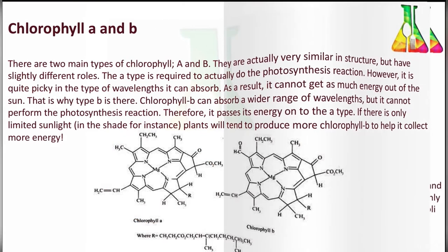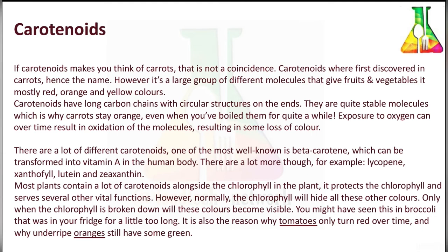Carotenoids are fat-soluble orange-yellow pigments present in many vegetables and fruits such as carrot, pumpkin, mango, and orange. The first carotenoid isolated was from carrot and was therefore named carotene. Its concentration in a vegetable is indicated by the intensity of that color. The most widely distributed carotenoids are lutein, violaxanthin, and neoxanthin, which are found in green leaves. Carotene and xanthins also occur widely in small quantities, and some pigments predominate in certain plants, like lycopene in tomato.